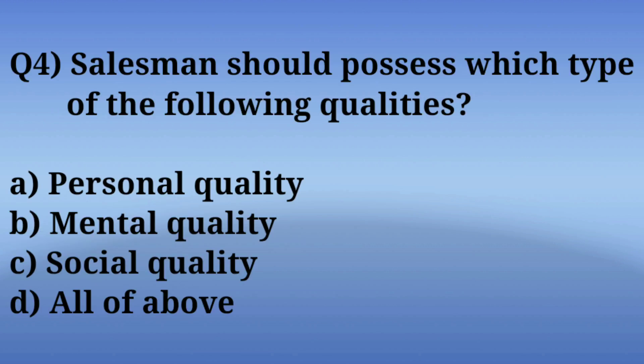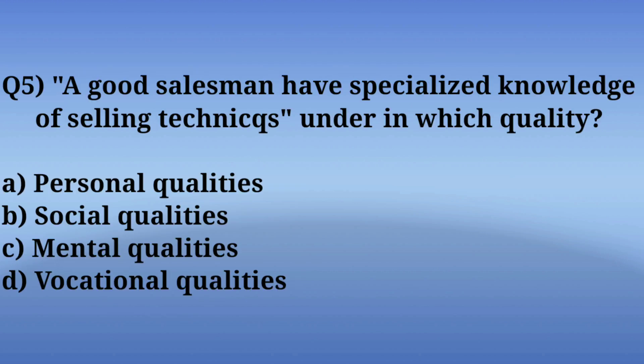Question number 4: A salesman should possess which type of qualities? Options include: A. Physical quality, B. Mental quality, C. Social quality, D. All of the above. The correct answer is Option D — All of the above. A salesman possesses various qualities including physical, mental, and social qualities.